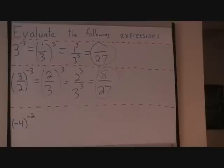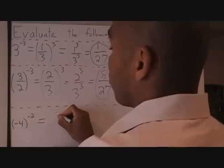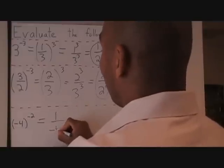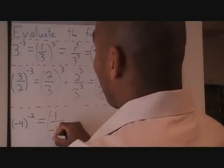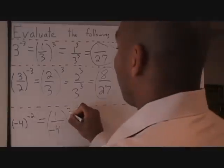Last but not least, I have negative 4 raised to the negative 2. Again, I'm going to rewrite this by taking the reciprocal of my base, which leaves me with 1 over negative 4, and my exponent then becomes positive.